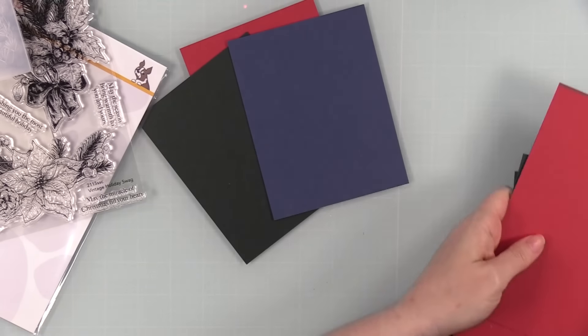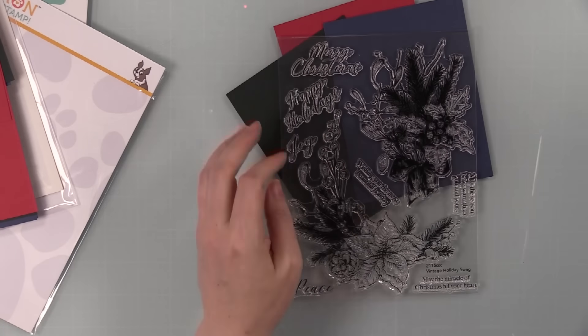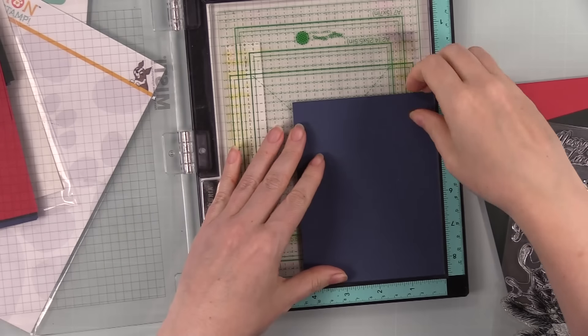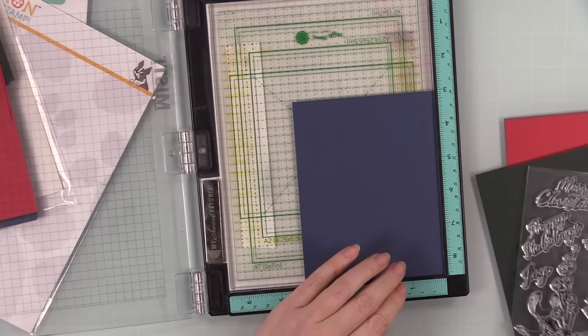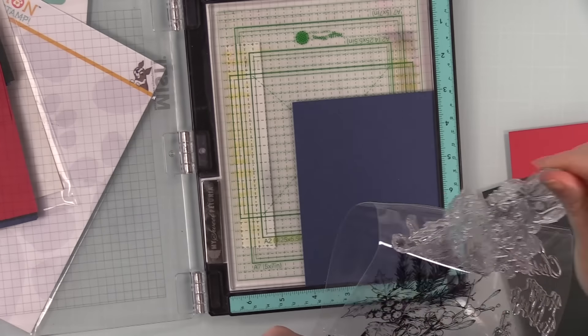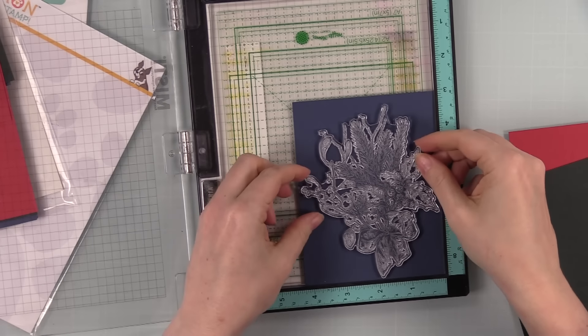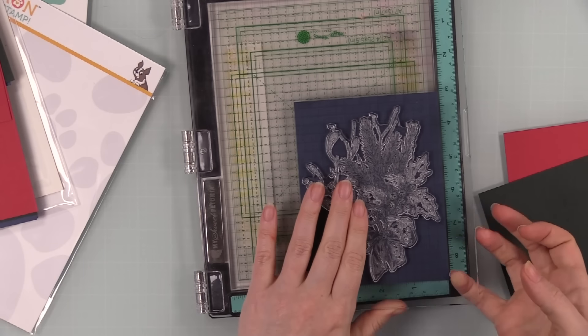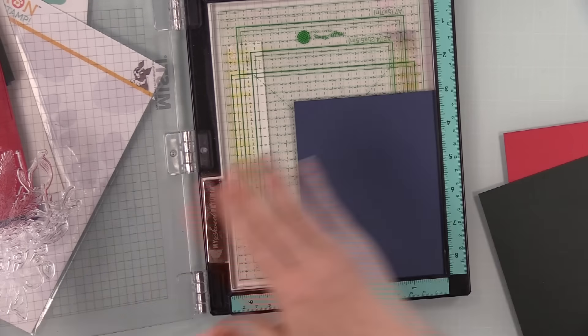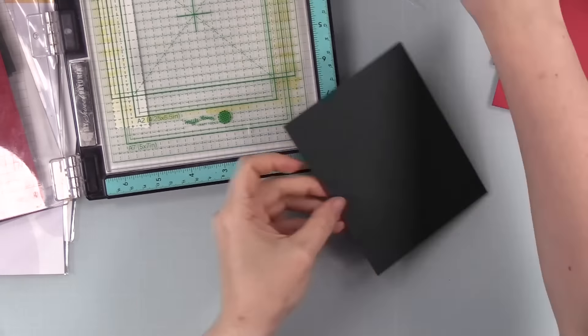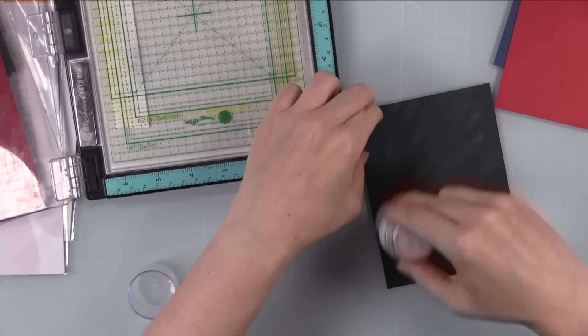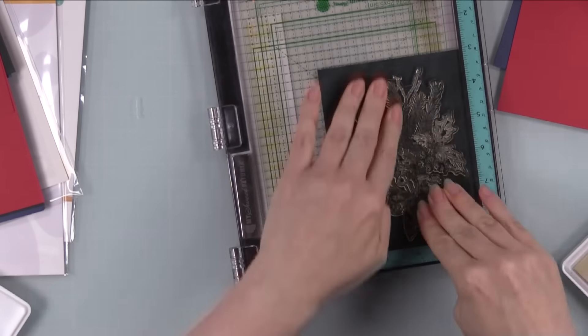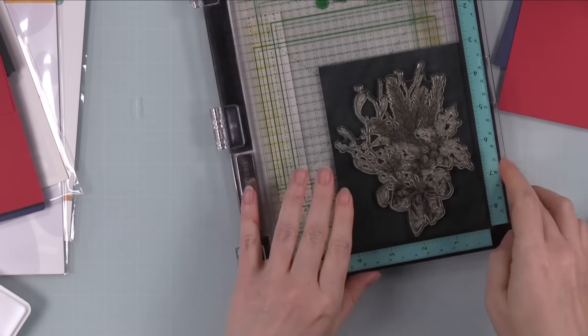I've got my three A2 size panels, which are 4.25 by 5.5 inches, and I'm going to use one of these big images from the Vintage Holiday Swag stamp set. There's two large images in this set and I decided I wanted to heat emboss them. I love heat embossing, and sometimes especially for holiday cards, you don't want to do a lot of coloring. This is one way to get a bit of bang on your cards without spending a lot of time coloring.